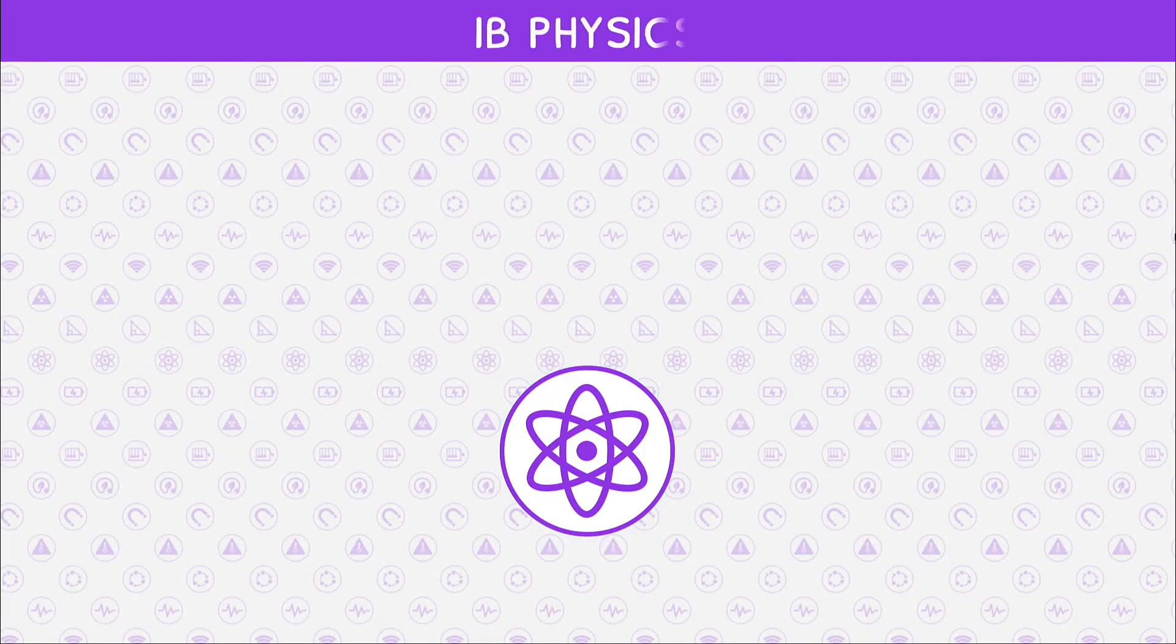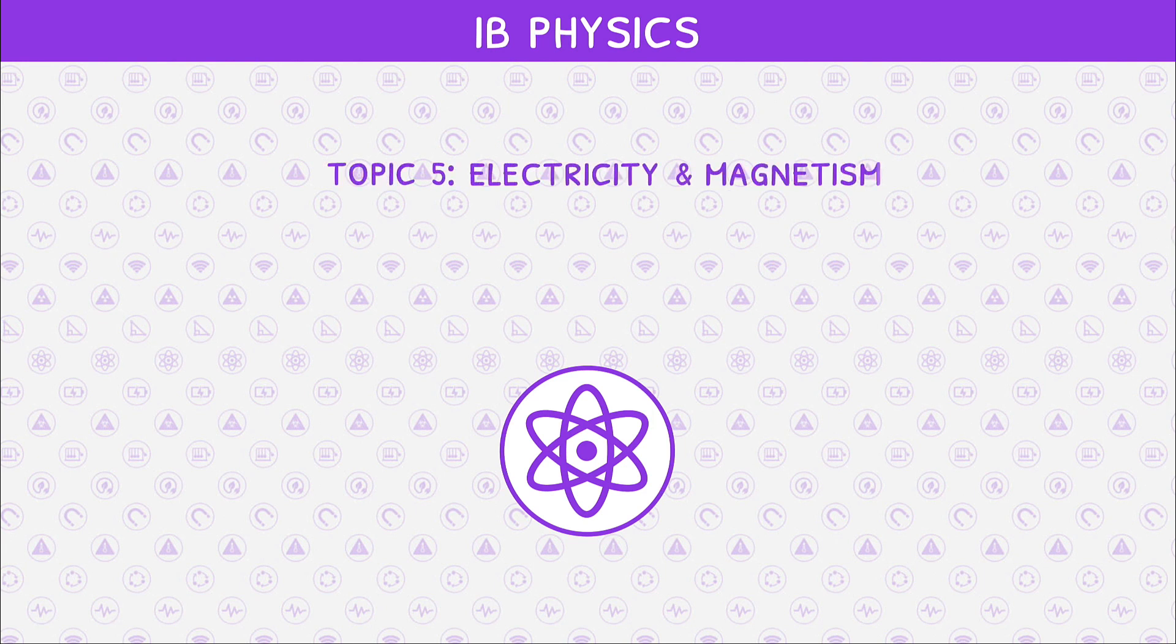Welcome back to our IB Physics video series. This is the second video in IB Physics Topic 5, Electricity and Magnetism, where we will be looking at voltage, current, resistance and power.